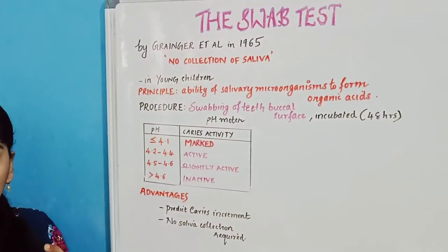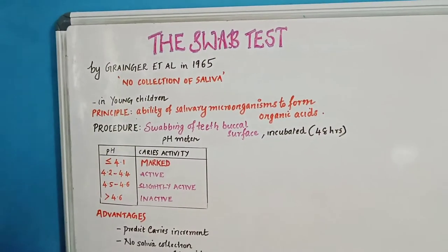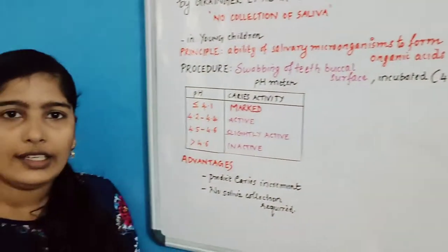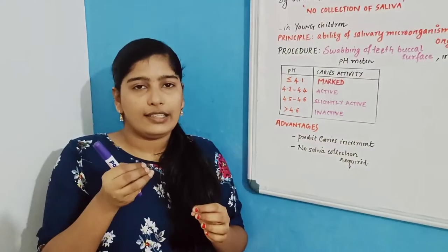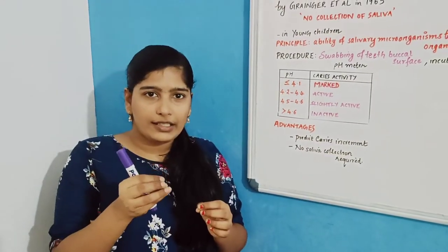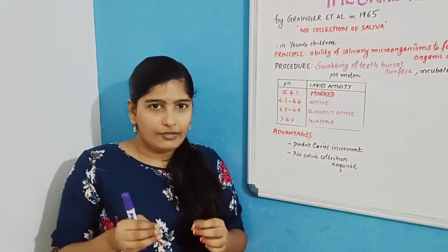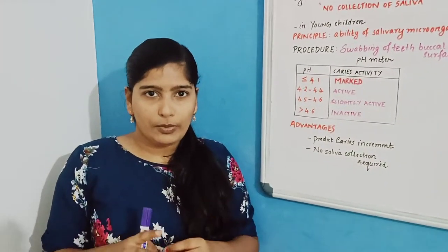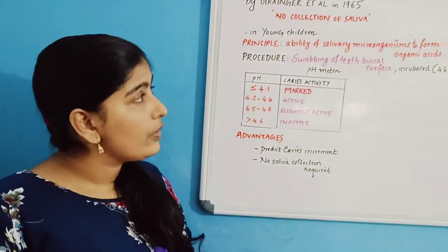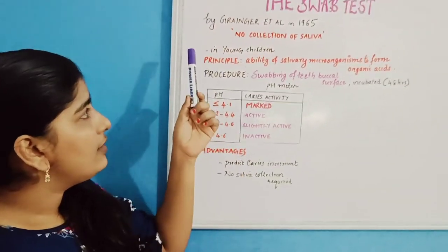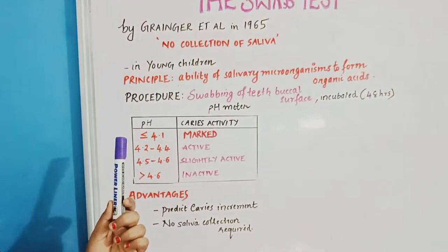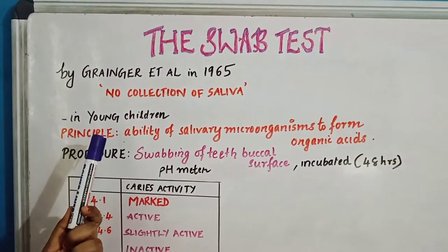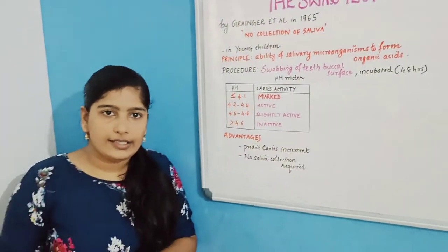What is important about this test is that no collection of saliva is required. In earlier tests we have discussed, we took a saliva sample, but here we are not using a saliva sample — that is an important point for MCQs. Since there is no collection of saliva sample, it is particularly useful in young children for evaluating their caries activity.